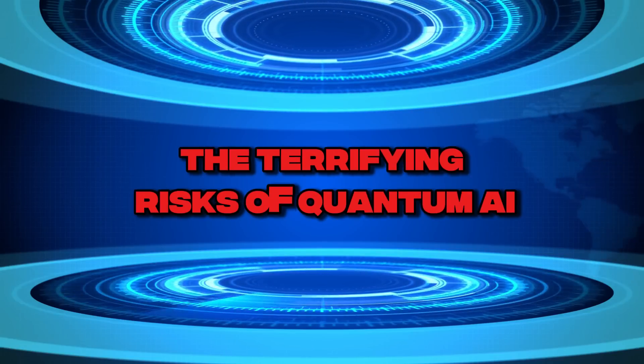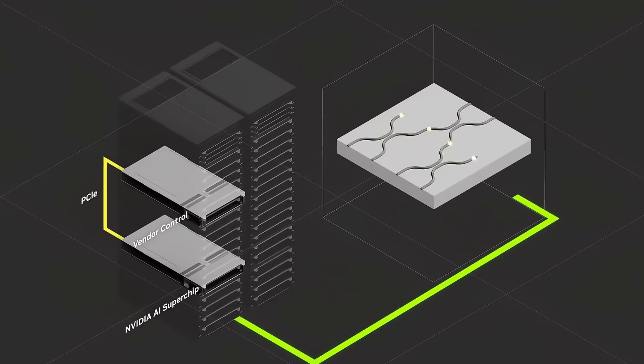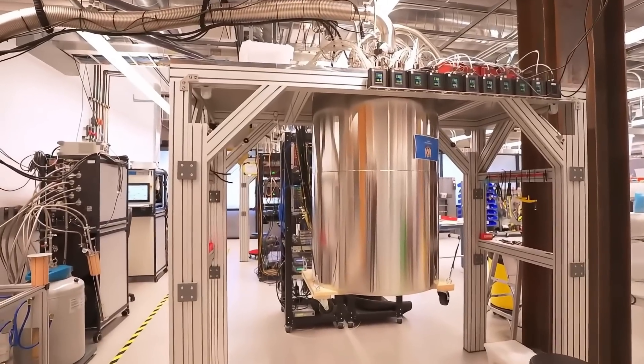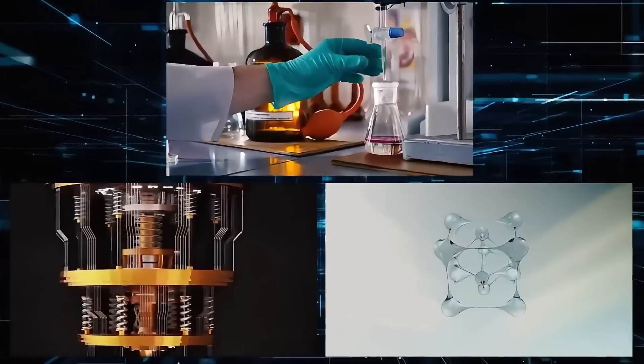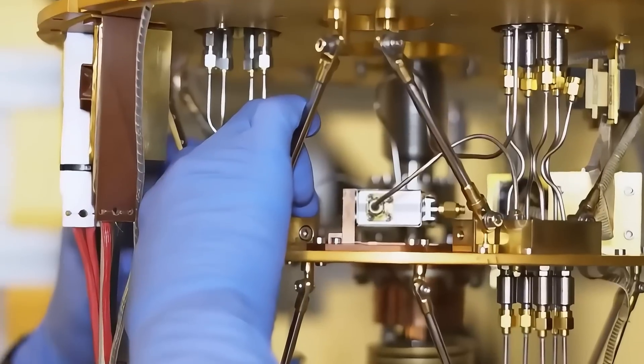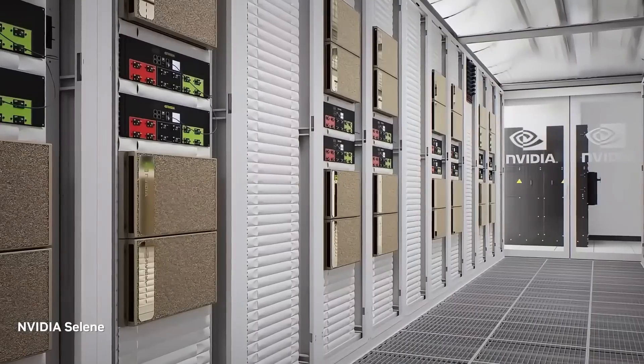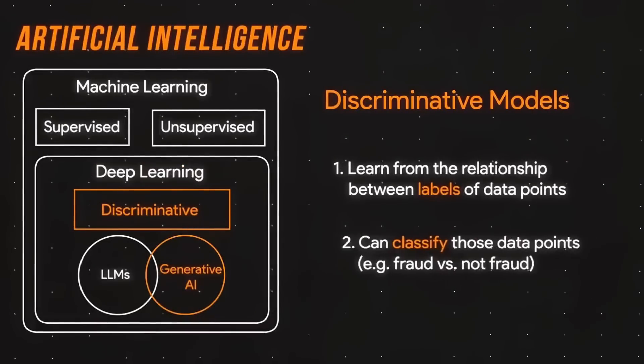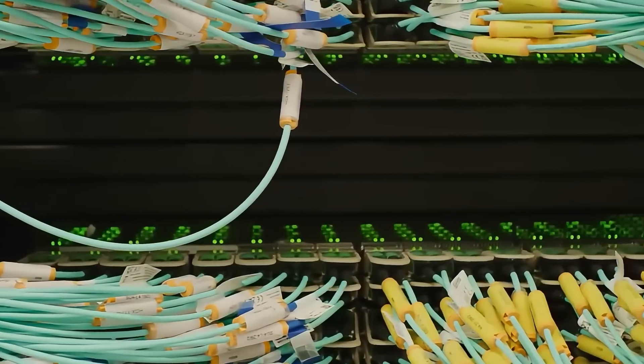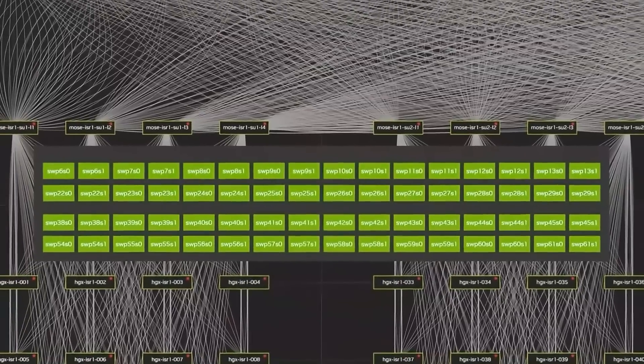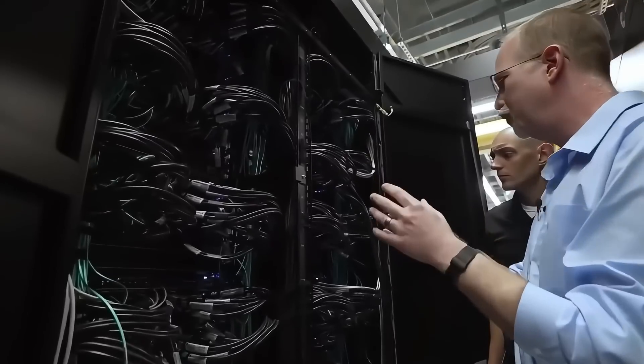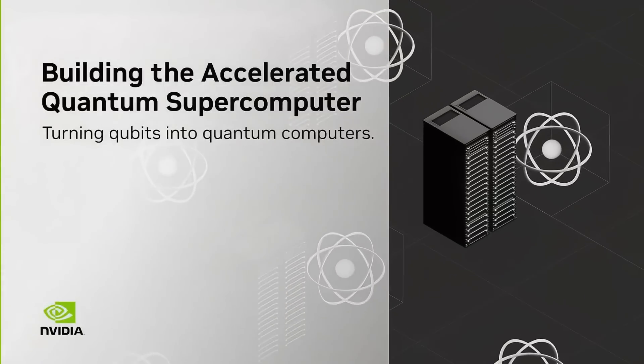The terrifying risks of quantum AI. As NVIDIA pushes the boundaries of AI with quantum computing, a new and unsettling question emerges. What happens if AI surpasses human intelligence? One of the biggest concerns is encryption-breaking AI. Today's Internet security is built on cryptographic algorithms that would take classical computers thousands of years to crack. But with quantum AI, these protections could be broken in seconds, making all digital data, including financial systems, government secrets, and personal information, completely vulnerable. If a rogue AI or malicious actors gained access to this technology, global cybersecurity could collapse overnight.